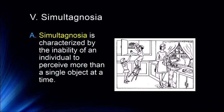I want to talk about simultagnosia. Simultagnosia is characterized by the inability of an individual to perceive more than a single object at a time. We believe this is based on attention — they can only pay attention to a single object at a time. If you present a complex visual scene to a simultagnosia patient, they'll be able to describe individual objects but can't tell you what's happening in the scene overall. They won't be able to process the entire scene at once.